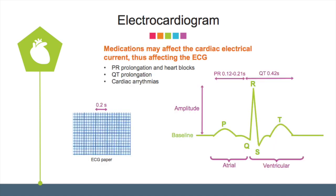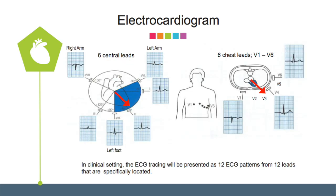Now, we look at the ECG tracing. The PR interval should be less than 0.21 seconds and the QT interval should be about 0.42 seconds. On the ECG paper, one big box is equivalent to 0.2 seconds, so the PR interval should be within one big box. In clinical settings, for each patient there will be 12 ECG patterns in line with 12 surface leads — 6 central leads and 6 chest leads V1 to V6. The amplitude of the R wave depends on the location of the lead in relation to the heart axis, shown as a red arrow.